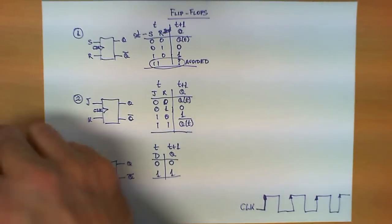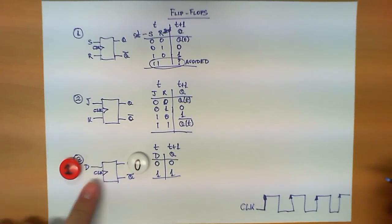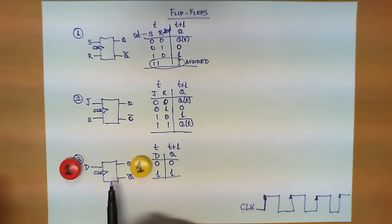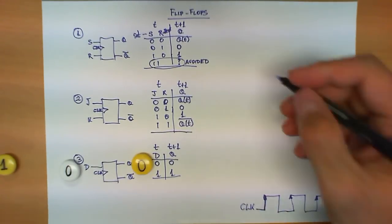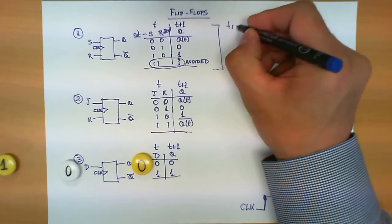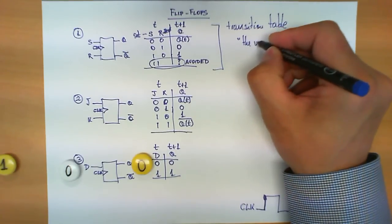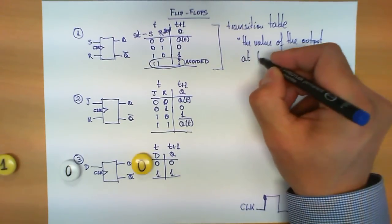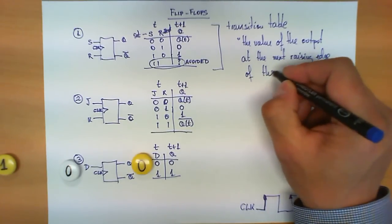Finally, the D flip-flop is very simple. If D is 1 and Q is currently 0, as soon as the rising edge of the clock comes, Q takes the value 1. If another rising edge comes and D hasn't changed, there is no change. If D changes to 0, the next rising clock edge changes Q back to 0. The transition table specifies the value of the output at the next rising edge of the clock.